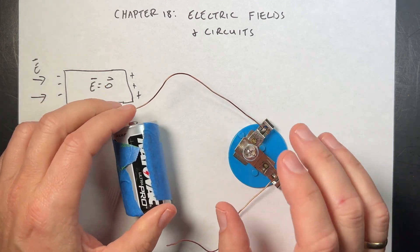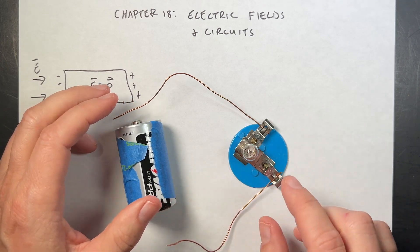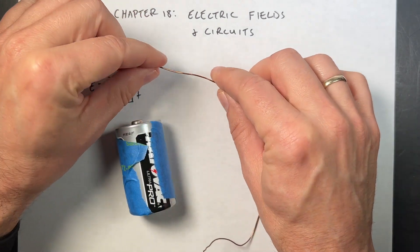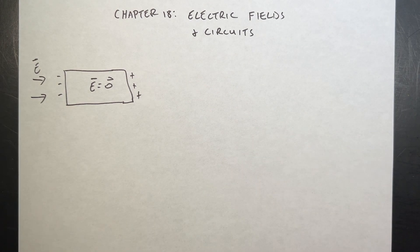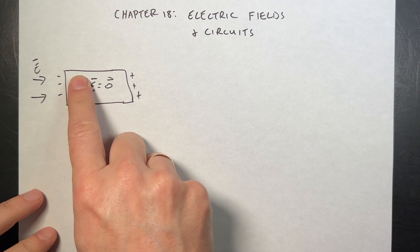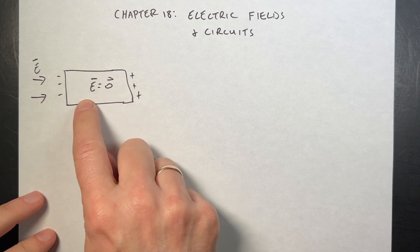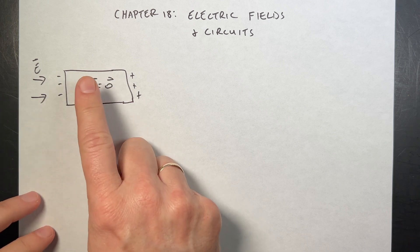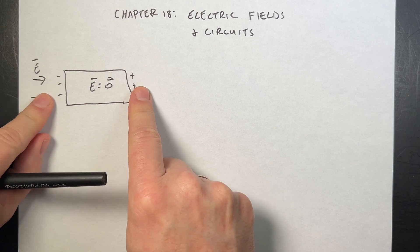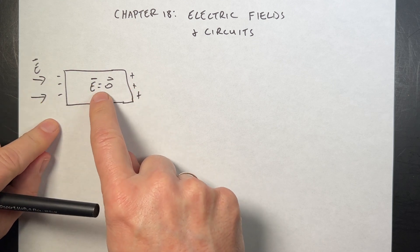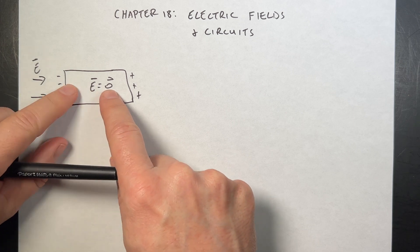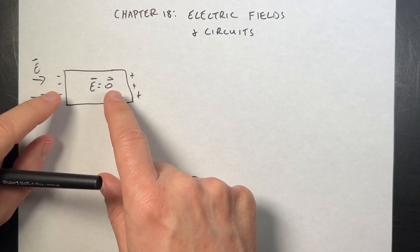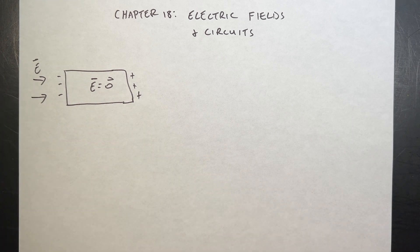But how can we use electric fields to explain this? Before, we looked at something like a metal conductor, and we said that if you have a conductor and you apply an external electric field, the charges will move around to make the net electric field inside zero. Because if it was not zero, those charges would move and rearrange until it is zero.